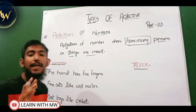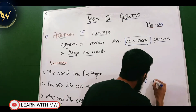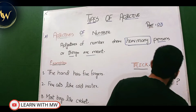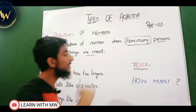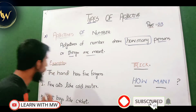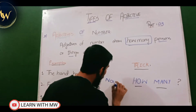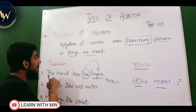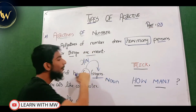For example: 'The hand has five fingers.' Finger is basically a name, so it is a noun. Five adds meaning to the noun finger, making five an adjective. If I ask 'the hand has how many fingers,' the answer is five fingers. So five is basically adjective of number because it answers the question how many. This is the trick: adjective of number basically shows how many.